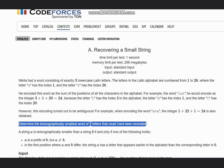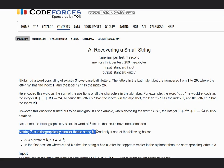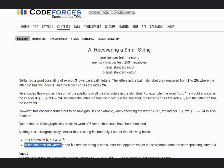We need to determine the lexicographically smallest word of three letters that could have been encoded. String A is lexicographically smaller than B if and only if A is a prefix of B but A is not equal to B, or in the first position where A and B differ, string A has a letter that appears earlier in the alphabet than the corresponding letter in B.